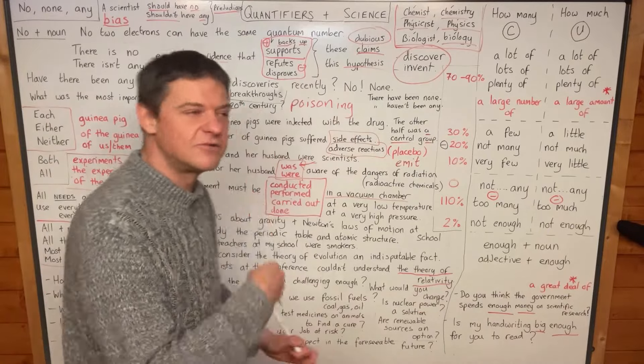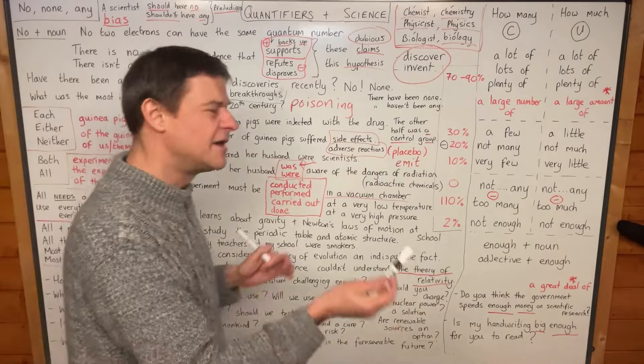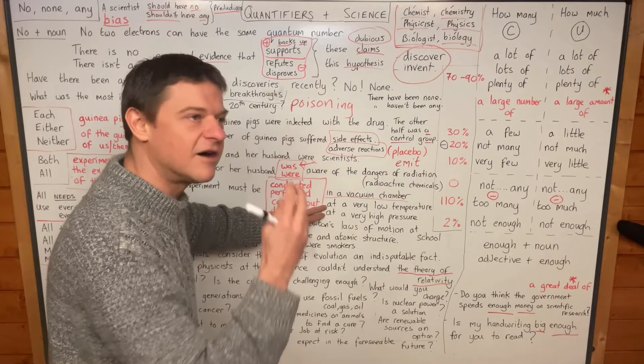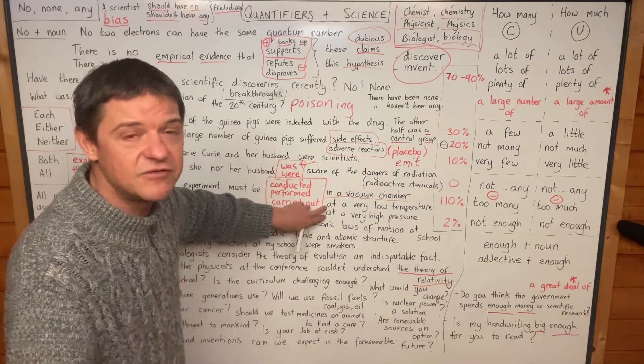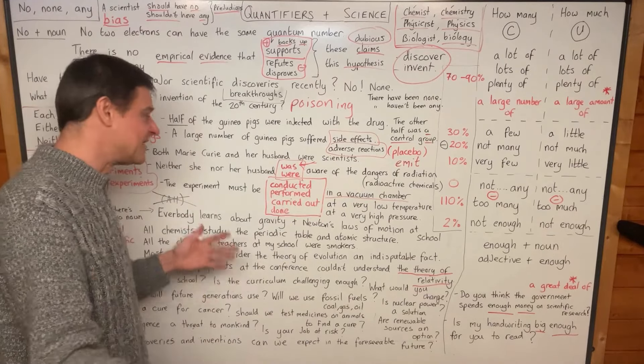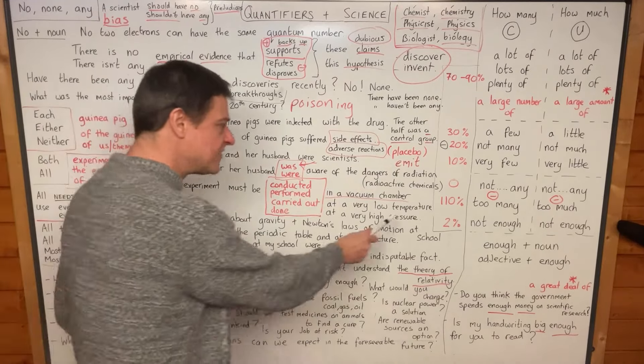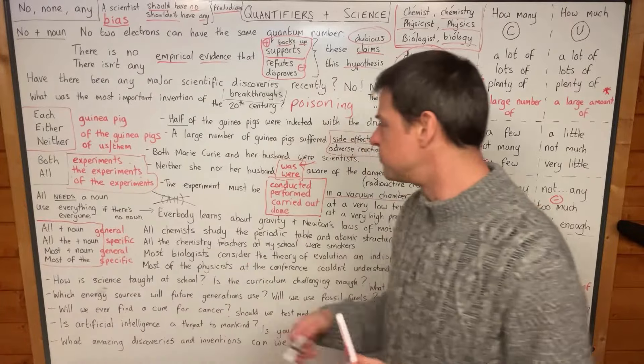You might say either at a low temperature or at a low pressure. Notice I'm trying to get equal parts in the either X or Y structure. It sounds better, sounds nicer, sounds clearer. Okay, so low temperature, high pressure - good words for science.